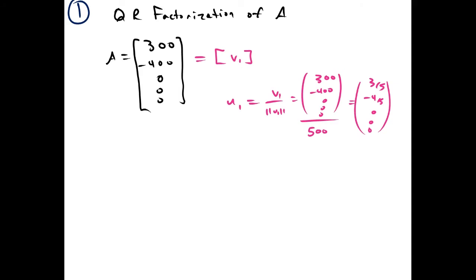So Q, the change of basis matrix, is just going to be U1, which is 3/5, -4/5, 0, 0, 0. And R, in this case, is just going to be the magnitude of V1, which was 500.